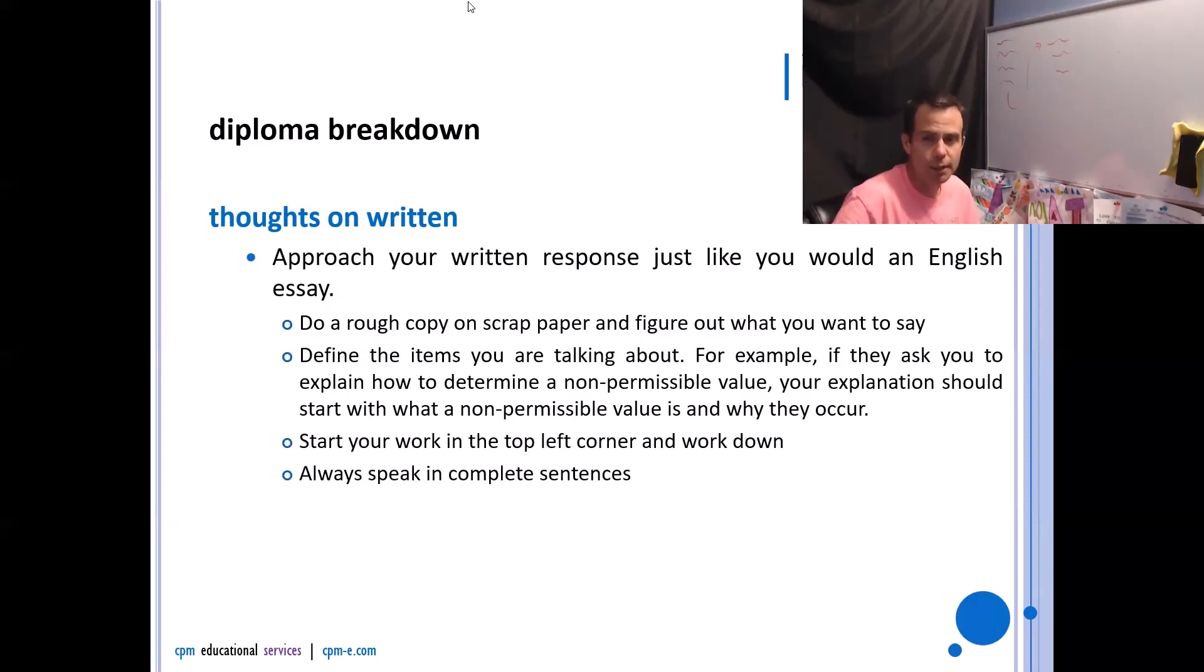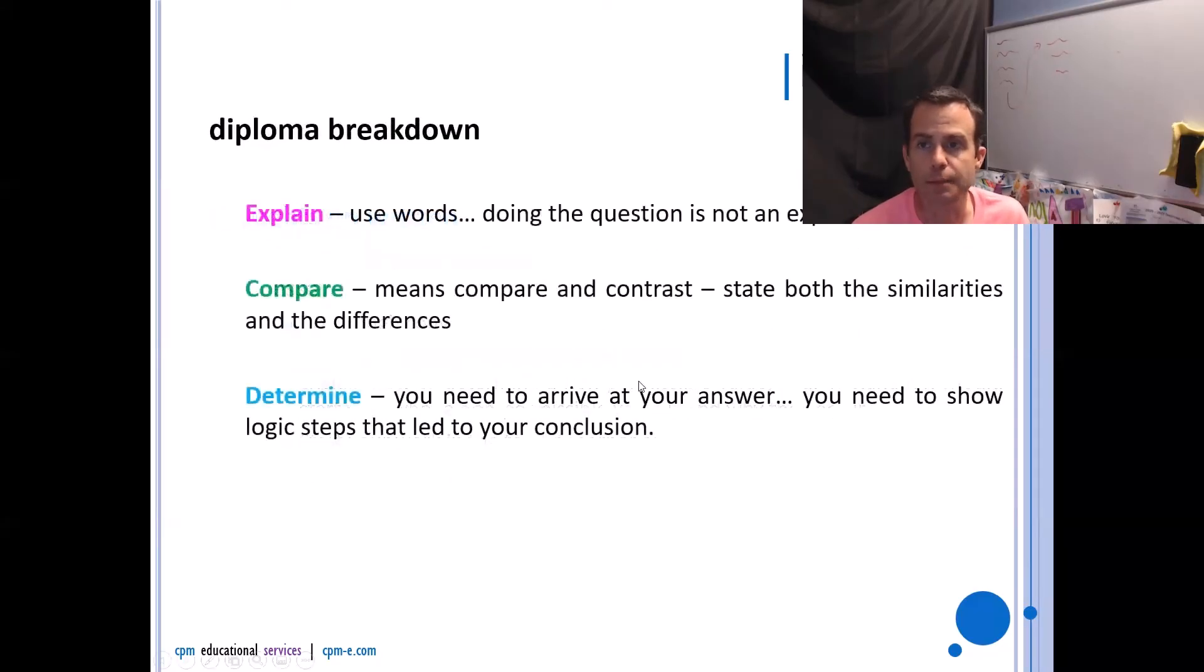Define the terms you're talking about. For example, if they ask you to explain how to determine non-permissible value, your explanation should start with non-permissible values are and they occur where. And so my answer is this. Be very coherent in how you're answering. Start your work in the top left hand corner work down. And always speak in complete sentences.